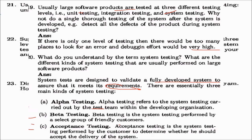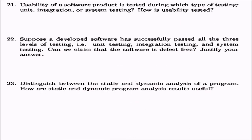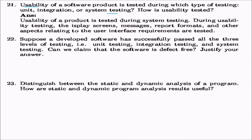Usability of a software product is tested during which type of testing? Usability is tested during system testing. During usability testing, display screens and messages, report formats, and other aspects relating to user interface requirements are tested.